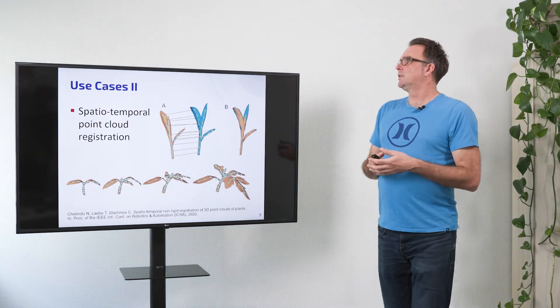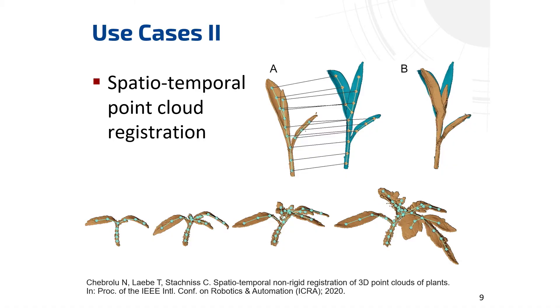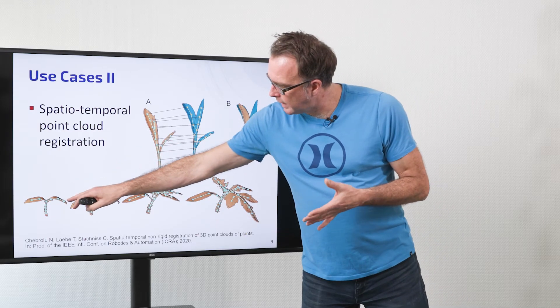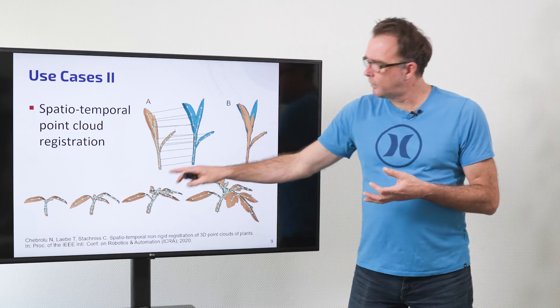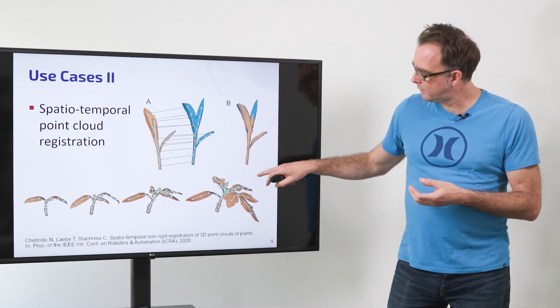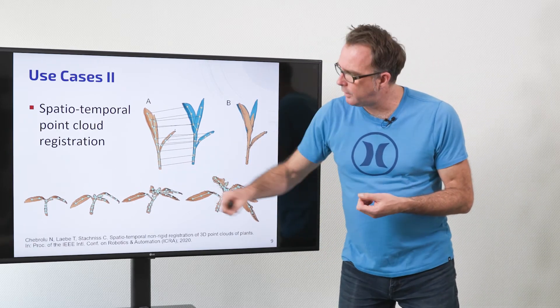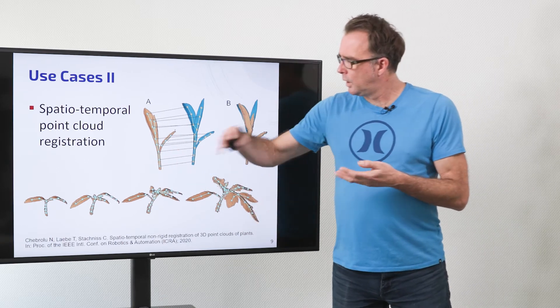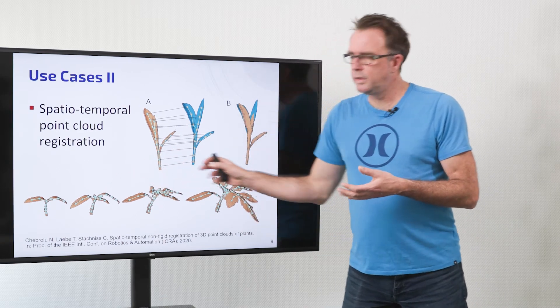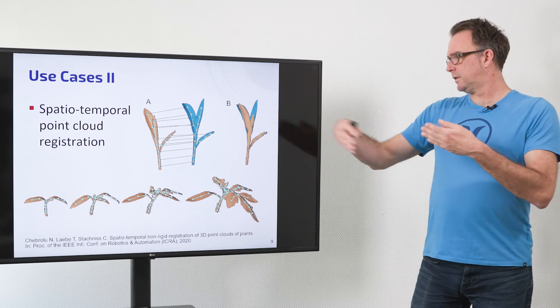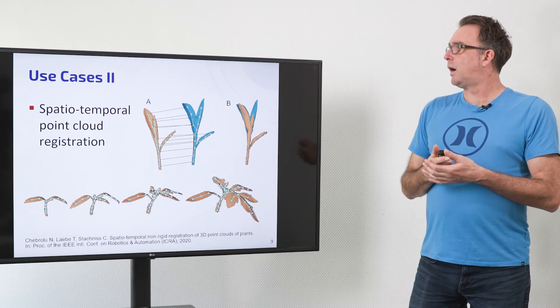In the second use case we applied it to spatial temporal registration where we try to extract the skeleton of the plant and then track the structure of the plants over time by using this kind of feature point that we have here in the middle and this can be used to interpolate between the time steps or to just follow the different organs and the different plant parts.